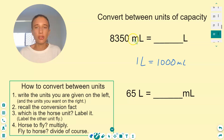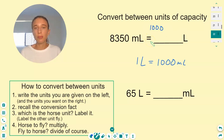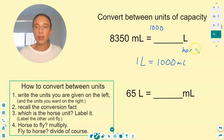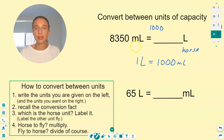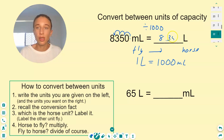We're converting 8,250 milliliters to liters — no need to cube anything. Conversion factor is a thousand. What's bigger, one liter or one milliliter? One liter. So fly to horse, divide of course. Dividing by a thousand, move the decimal point three places to the left to make the number smaller. And we're done with that question.